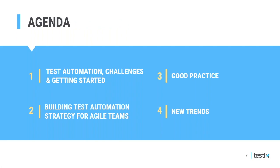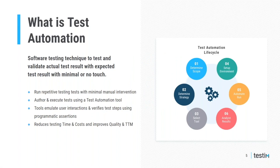My presentation will cover four main areas: starting with the basics — what is test automation, some of the challenges, and where to get started. Next, I'll cover strategies and best practices for implementing test automation. Finally, I'll wrap up with a brief overview of how artificial intelligence and machine learning are being introduced into software testing and autonomous software testing.